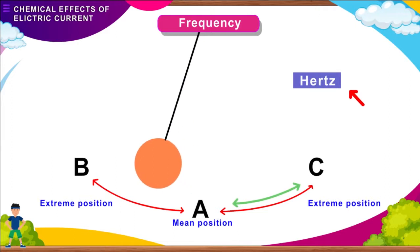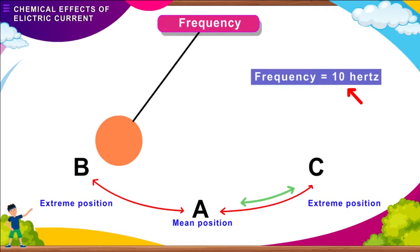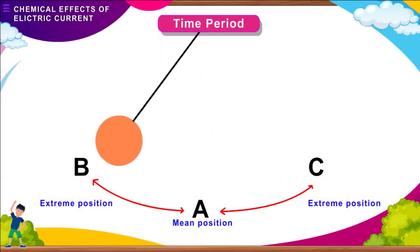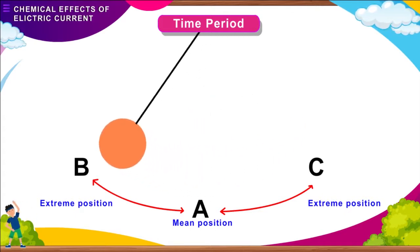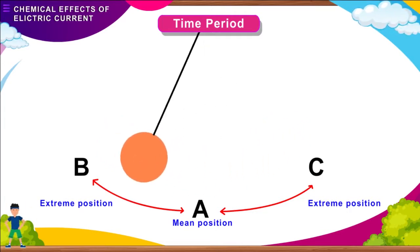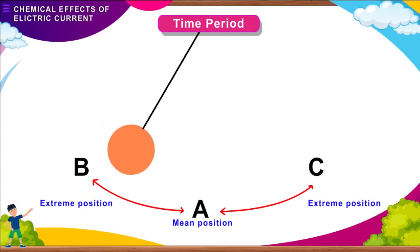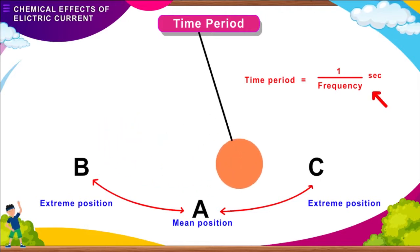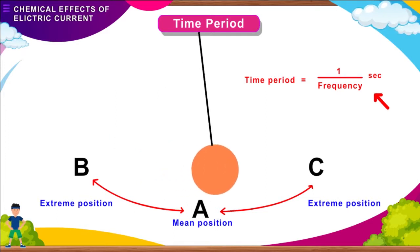For example, if the pendulum makes 10 oscillations every second, its frequency will be 10 Hertz. Time period refers to the time taken by the pendulum for one complete oscillation. It remains the same as long as the length of the pendulum does not change. Time period is equal to 1 divided by frequency, and is measured in seconds.